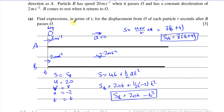So the expressions for displacement from O are: SA equals 8(T plus 4), which is 8T plus 32, and SB equals 20T minus T squared. Those are the answers to part A.